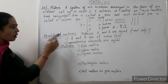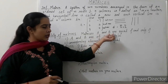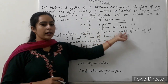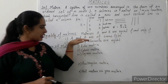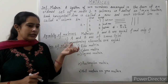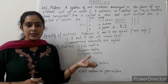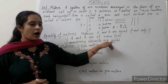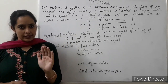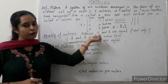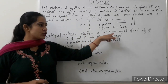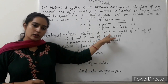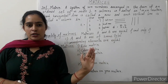Next is equality of matrices. We usually denote matrices by capital letters. Matrices A and B are equal if and only if: first condition is A and B are of the same type, meaning A and B should have the same order. Next, the corresponding elements are equal — the element in first row and first column of A and first row and first column of B should be equal, and so on for all corresponding elements.